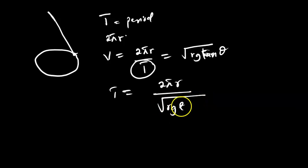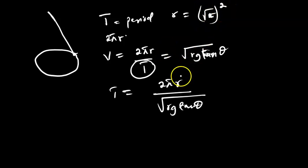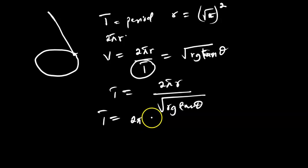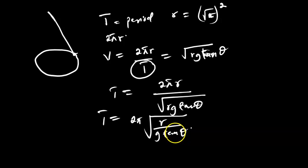Cross-multiplying, T = 2πr / √(rg tanθ). Looking carefully, r is in the numerator and r is also under the square root. The r on top is the same as √r squared, so this simplifies: T equals 2π times the square root of r over g tanθ. Therefore T = 2π√(r / g tanθ).